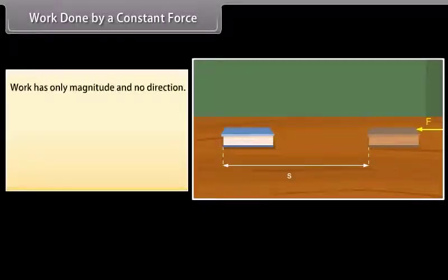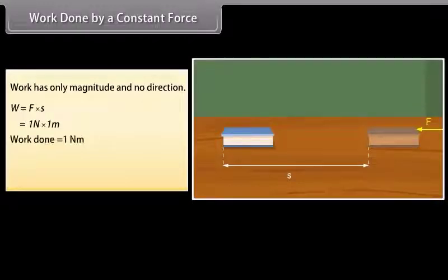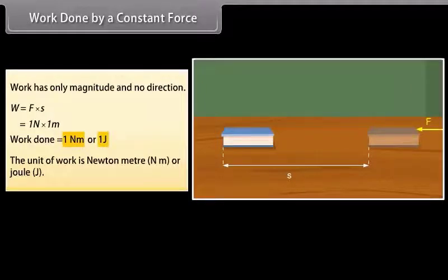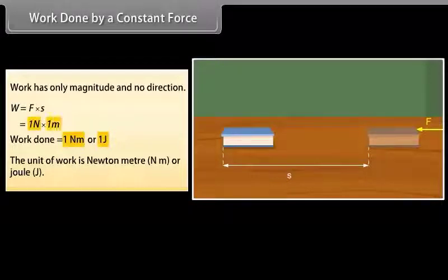Work has only magnitude and no direction. If F = 1 N and S = 1 m, then the work done by the force will be 1 N·m. The unit of work is Newton meter or Joule. Thus, 1 Joule is the amount of work done on an object when a force of 1 N displaces it by 1 meter along the line of action of the force.